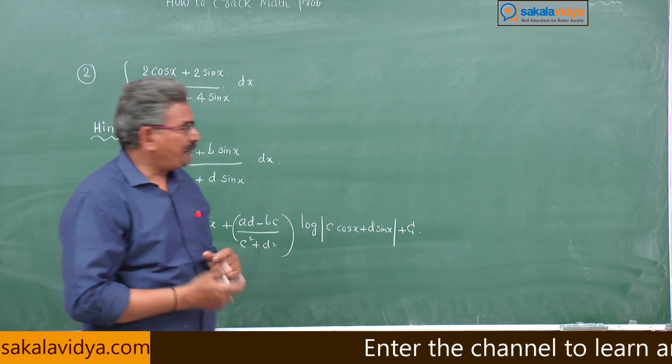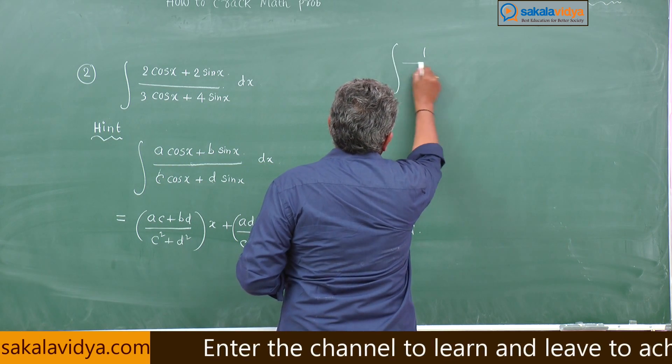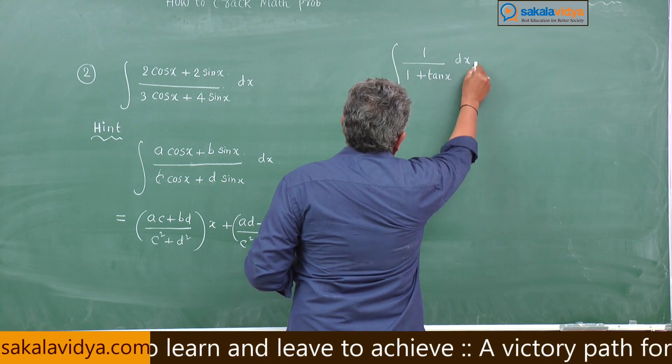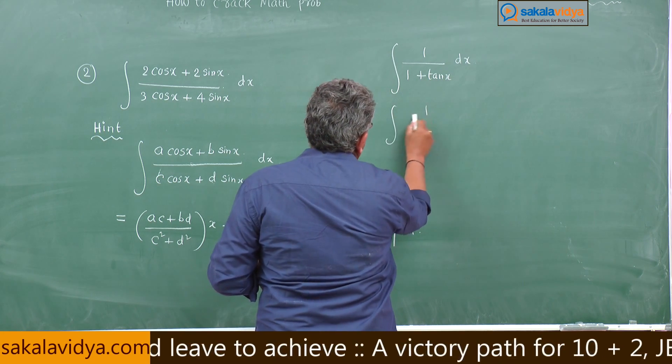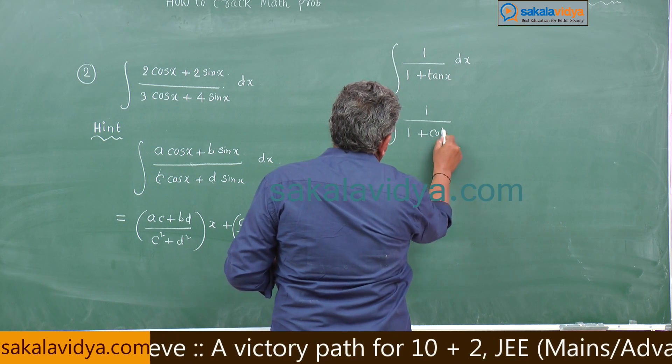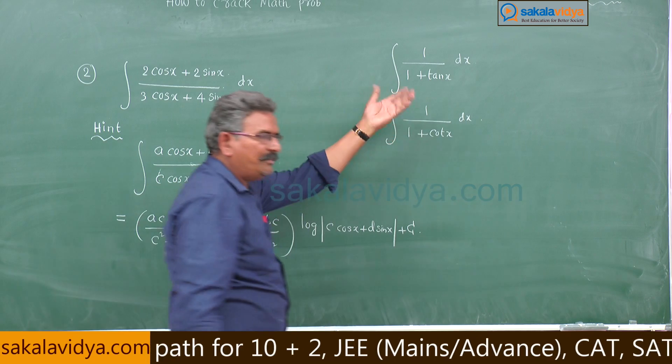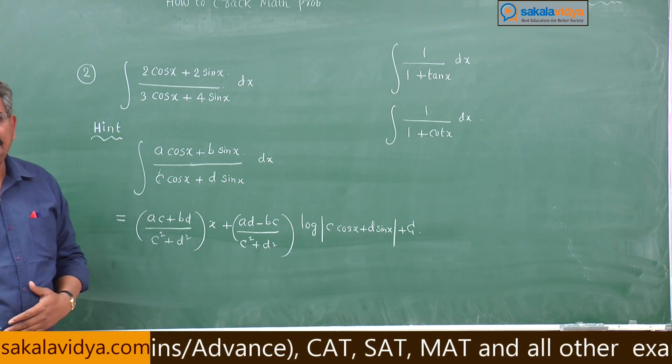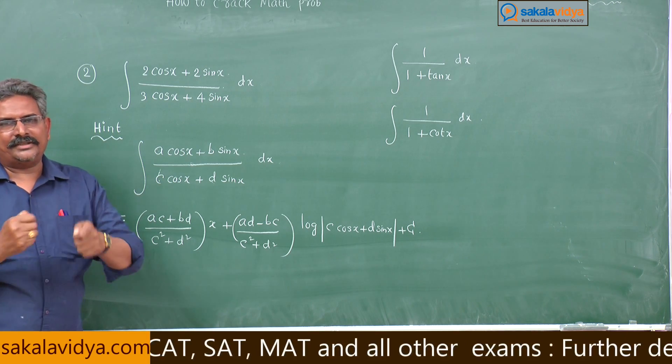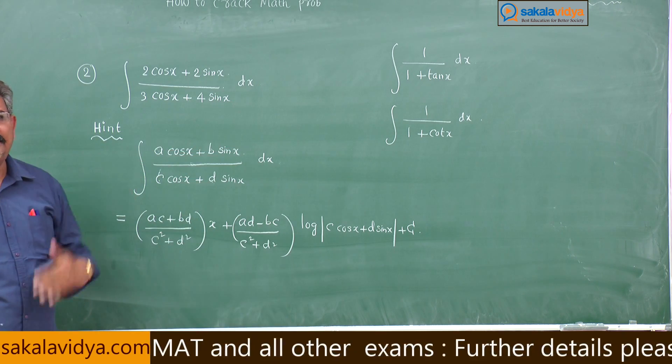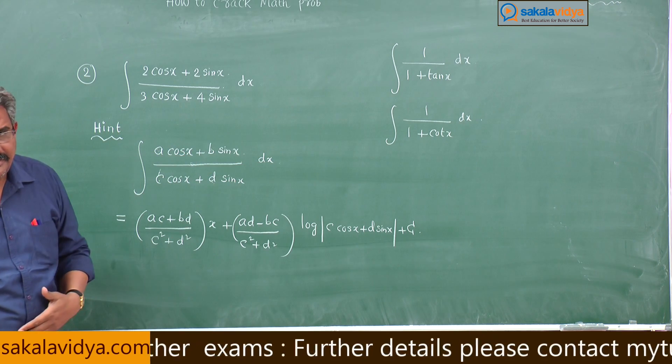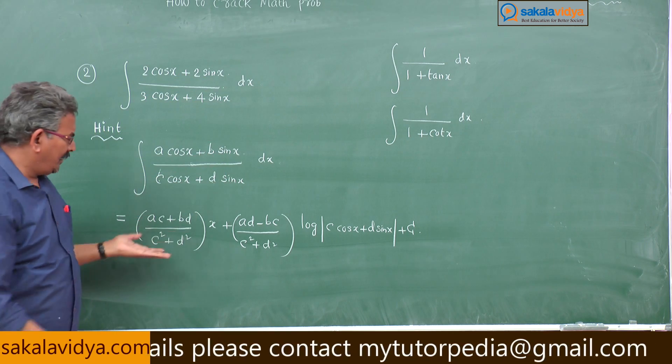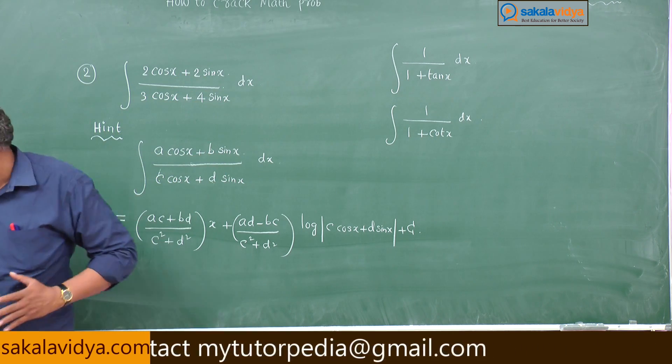Even though 1 by 1 plus tanx integral, 1 by 1 plus cotx dx also can be solved using the same shortcut. You may have one doubt - if the question is given like this, how can they be solved? You know tanx can be written sinx by cosx, whereas cotx can be written cosx by sinx - that can be put in this form. After putting in this form, directly we can write the answer.